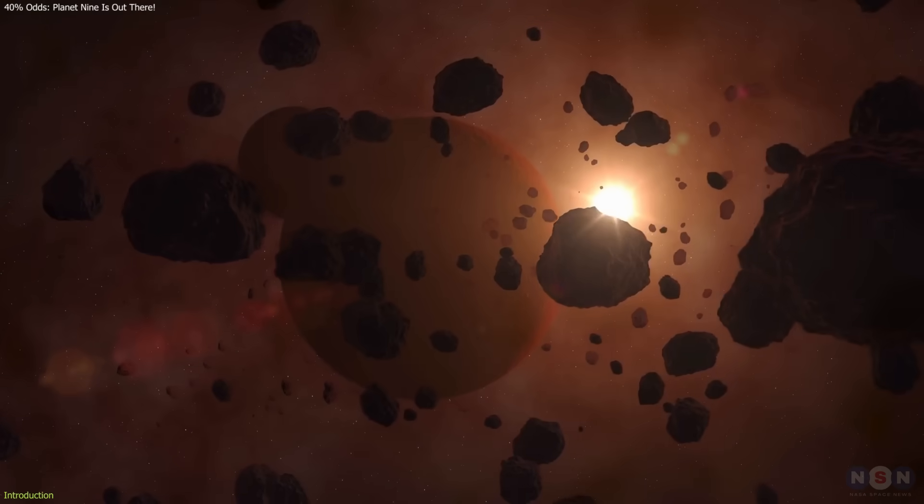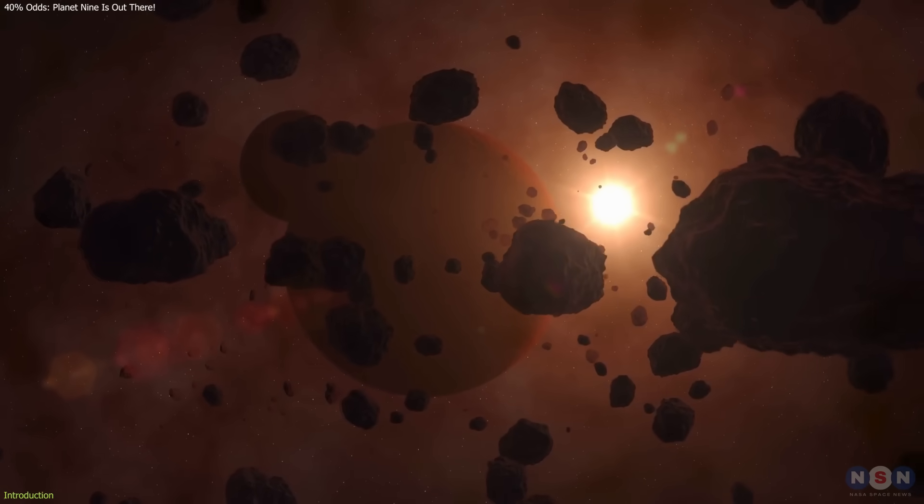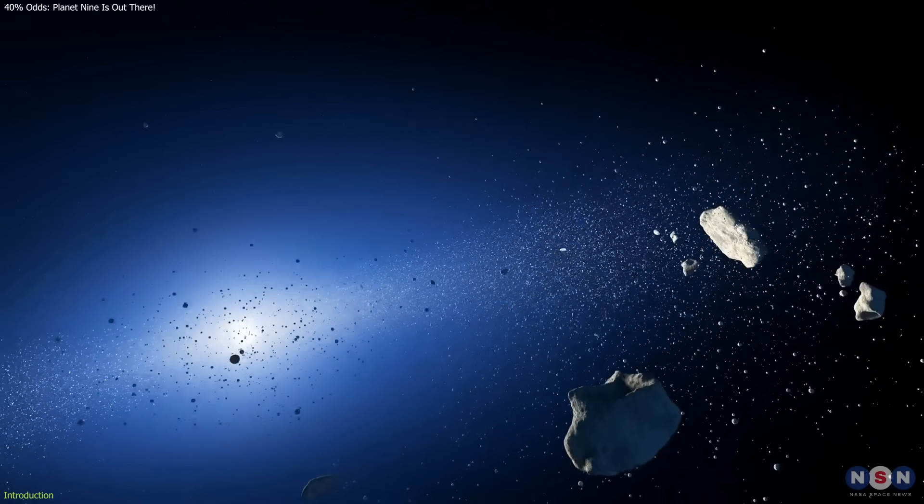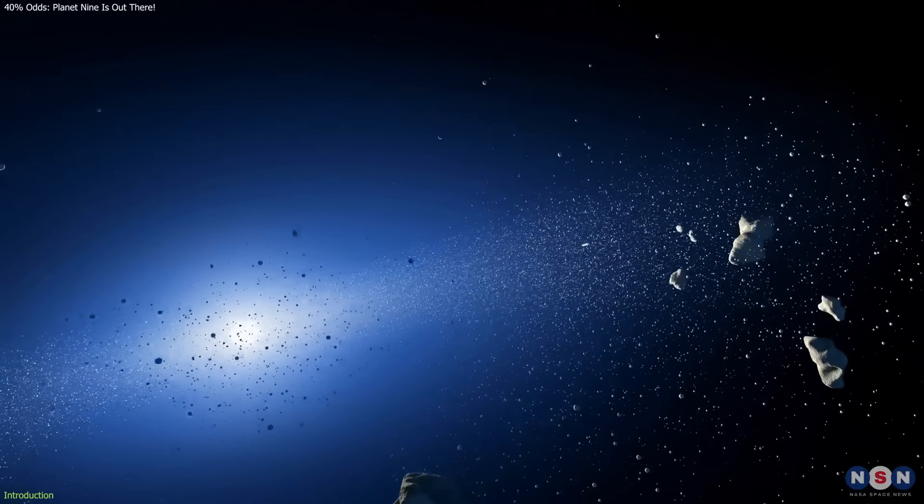For years, astronomers have suspected a hidden ninth planet, Planet 9, shaping the orbits of distant solar system objects, but no direct evidence has emerged.